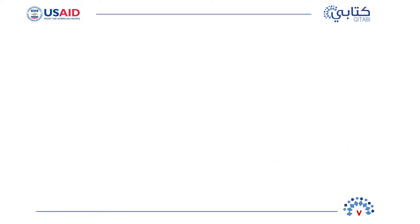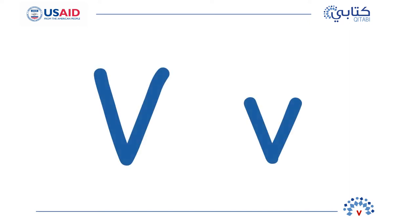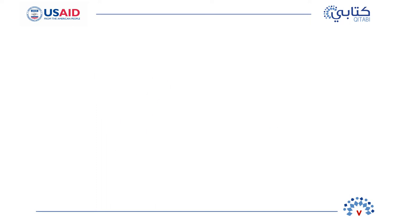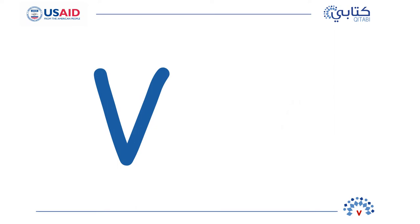Now, let's learn our new letter for the day. This letter's name is V. The letter V makes the sound V. Say this sound with me: V, V, V. We need to learn this letter so we can read words with the letter V. You will hear this sound V a lot in English words. Can you see a big V and a small V? Both the big V and the small V make the sound V.